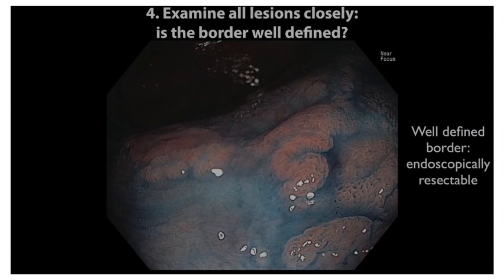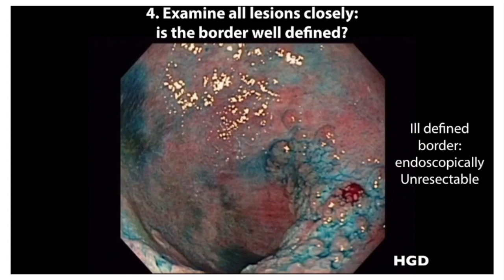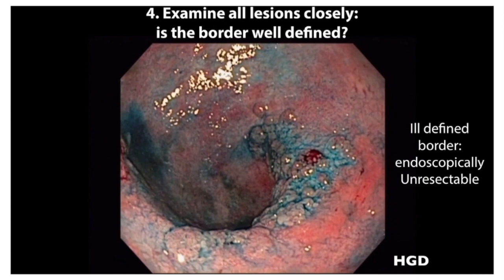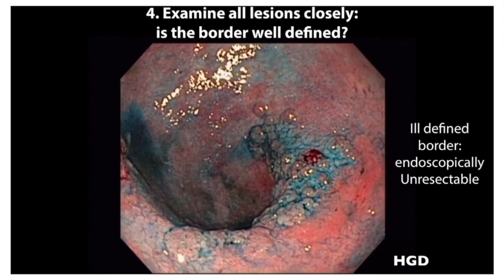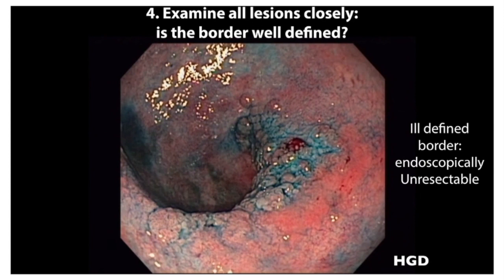In contrast to the prior case, this lesion has several features indicating it is not endoscopically resectable — it is poorly circumscribed, has an indistinct border, and has an irregular plaque-like surface with a depressed center. Biopsies confirmed high-grade dysplasia. Surgery is the best treatment.